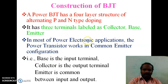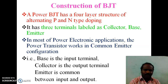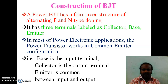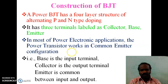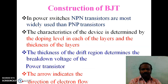In most power electronic applications, the power transistor works in common emitter configuration. There are three configurations: common emitter configuration, common base configuration, and common collector configuration. Even though we have three types, we most widely use only common emitter configuration. Common emitter configuration means emitter is common to both input and output, where base is the input and collector is the output. Among NPN and PNP transistors, we widely use NPN Transistors.